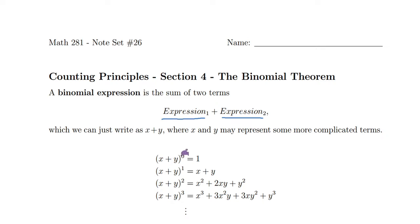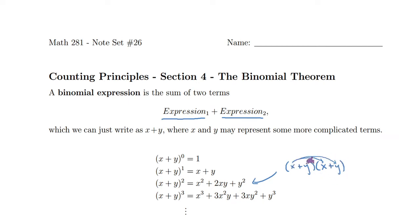If I raise x plus y to the zeroth power, we know that'll be one. If I raise it to the first power, I get back what I started with: x plus y. If I square it, this is where you first learn about FOILing — you'd have x plus y times x plus y, and use the distributive property. The first two terms multiply to give x squared, then you'd get two xy terms, and then y squared. So you get x squared plus 2xy plus y squared. If you cube it, you take that squared version, multiply by another x plus y, use the distributive property, and you'd end up with a somewhat nice result.